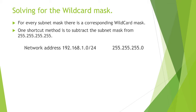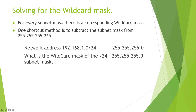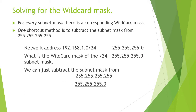So if I have a network address of 192.168.1.0 slash 24, then I know my subnet mask is 255.255.255.0. If I use this shortcut, then I'm going to subtract this subnet mask from 255.255.255.255. So I take 255.255.255.255 minus the subnet mask of 255.255.255.0.